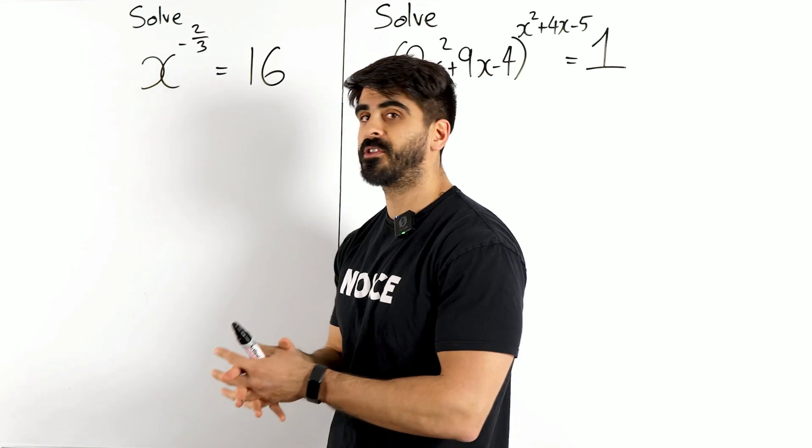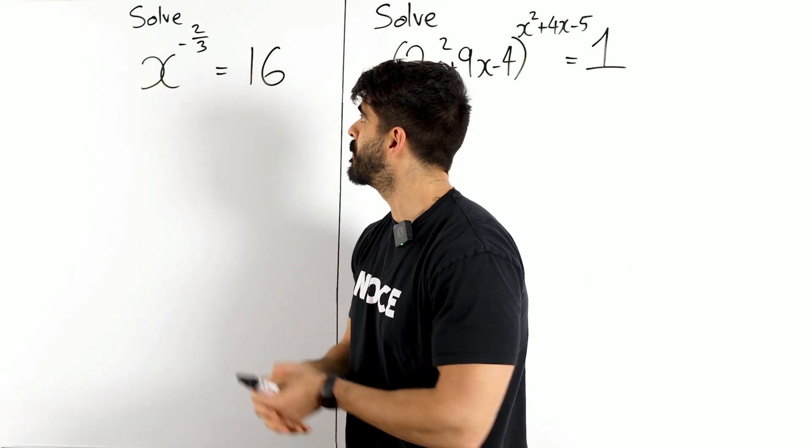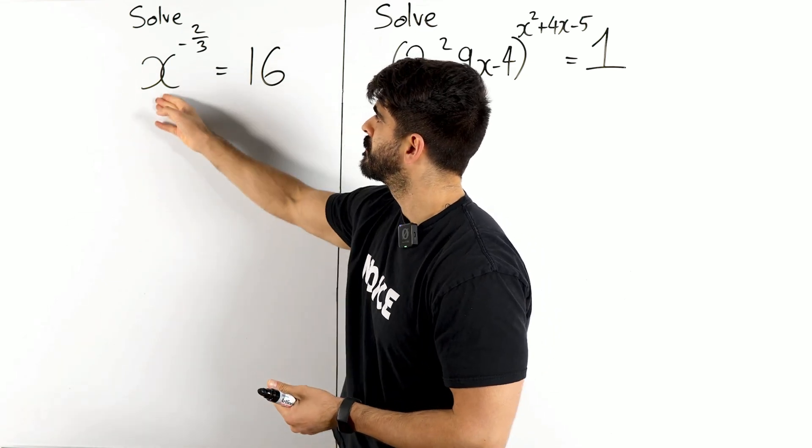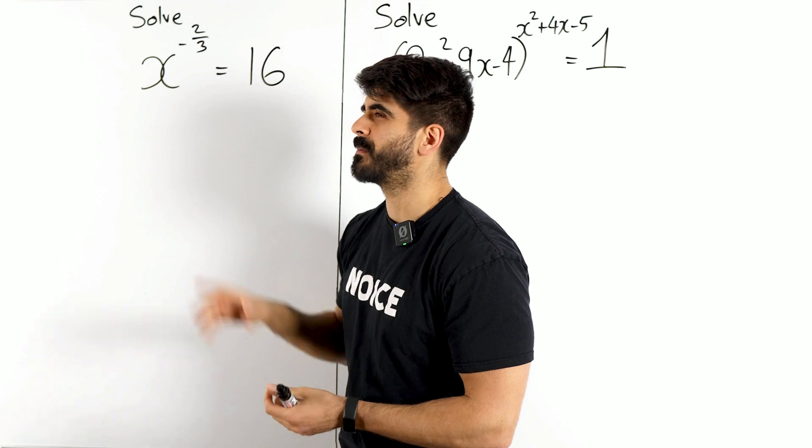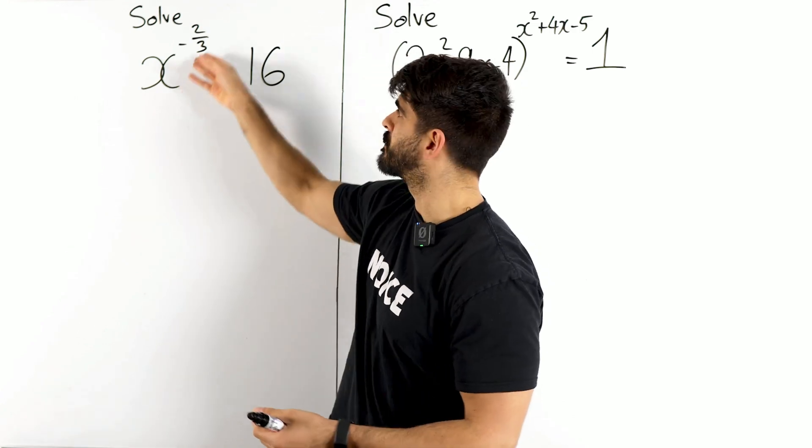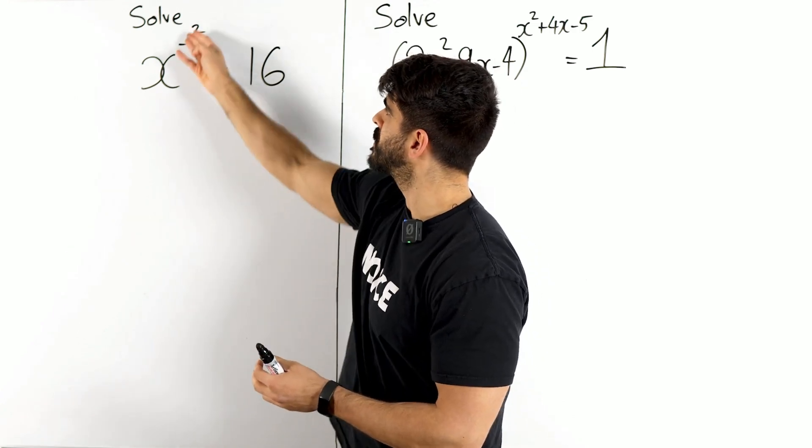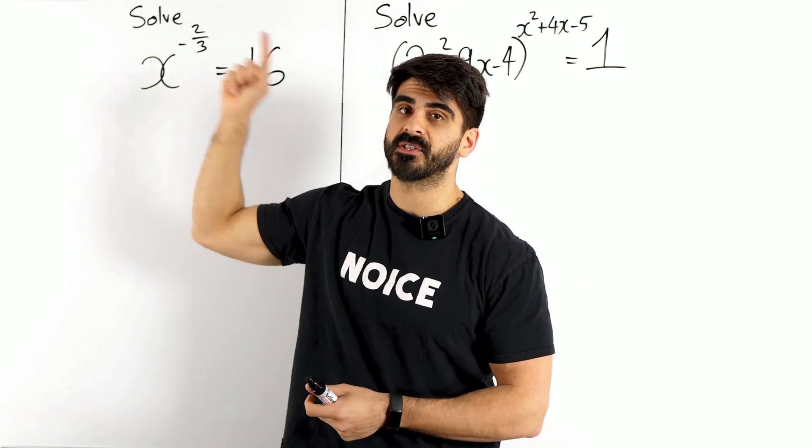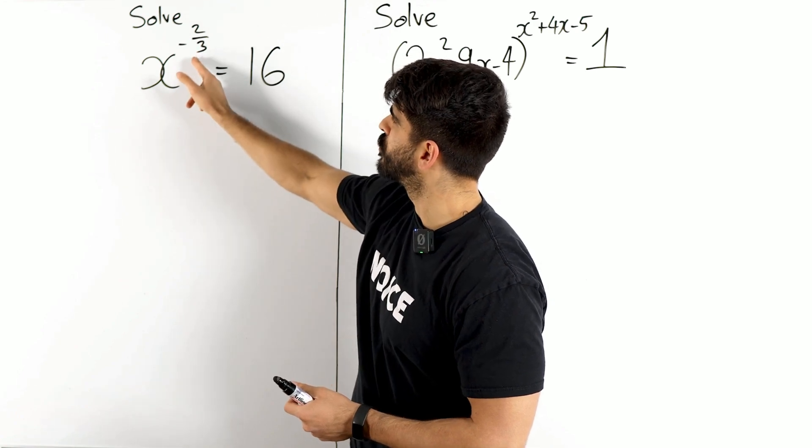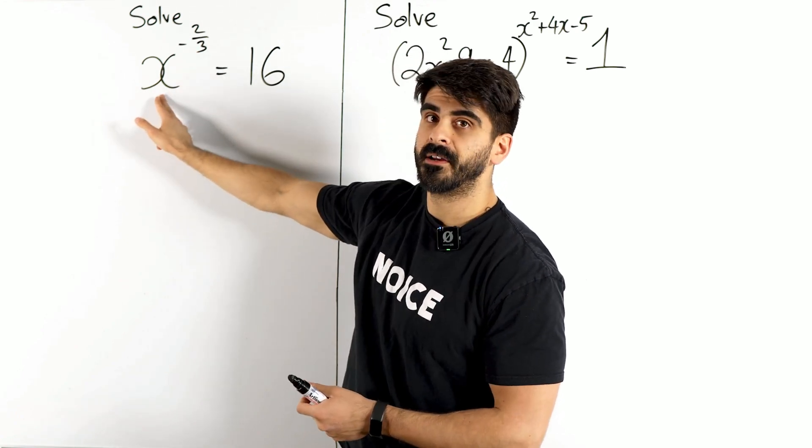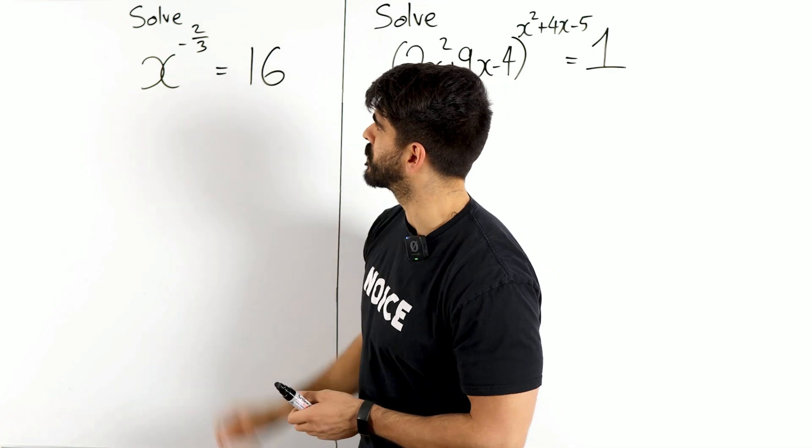We're finding the unknown base this time. We've been practicing a lot of, you have something like maybe 27 to the power of minus two thirds, and understanding what a fractional power does to the number. Here, we need to understand what the fractional power does to this number, but then do the opposite to be able to find it.